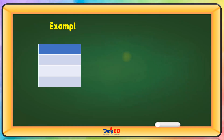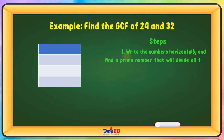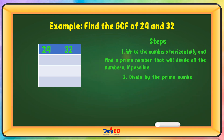Example: find the GCF of 24 and 32. Write the numbers horizontally and find a prime number that will divide all the numbers if possible. We have 24 and 32. We will divide by prime number 2 and write the quotients below. 24 divided by 2 equals 12, and 32 divided by 2 equals 16.